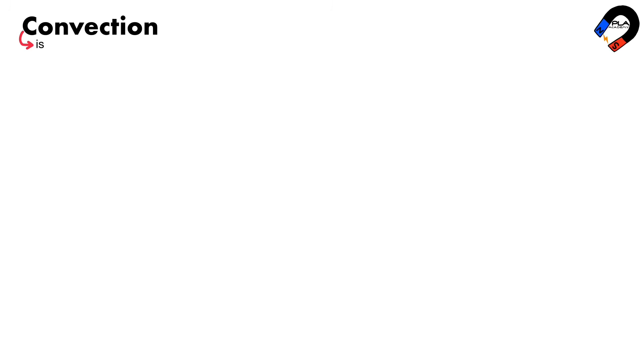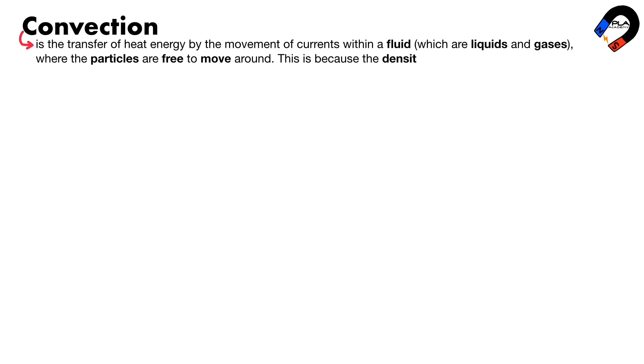Convection is the transfer of heat energy by the movement of currents within a fluid, which are liquids and gases. The particles are free to move around. This is because the density of the fluid changes when it is heated.